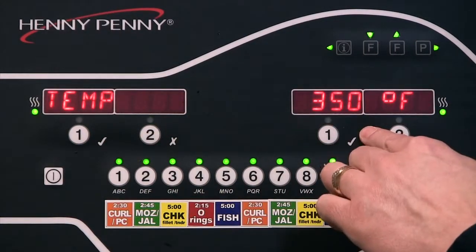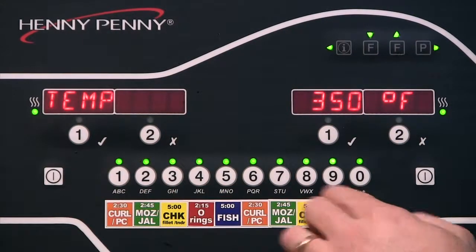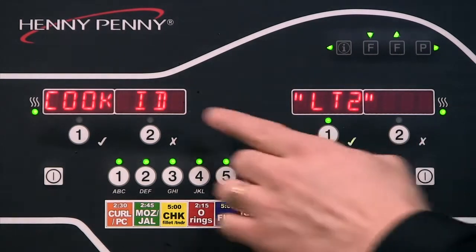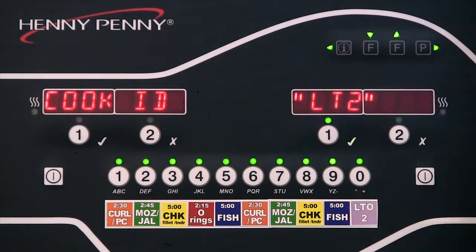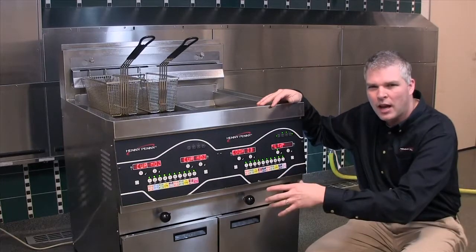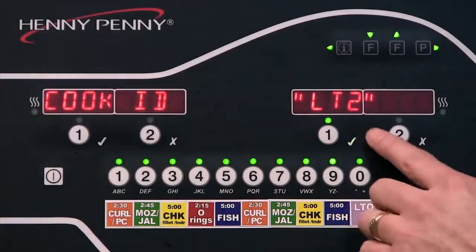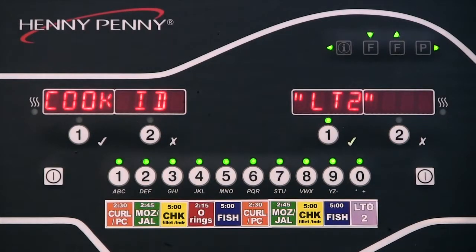Temperature, we're going to leave the same at 350, but if I wanted to change it, I could use the buttons down here to change that. Cook ID, this is what flashes while we're cooking product. It'll flash the time and then this little abbreviation. We're going to leave that the same, but you would change this the same way we changed the product name.